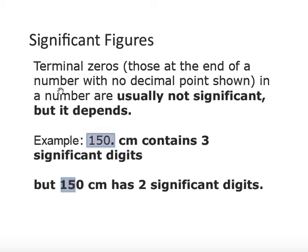Terminal zeros — those at the end of a number with no decimal point shown — are usually not significant, but it depends. For example, with a meter stick measuring something that happens to be exactly 150 centimeters: if we want to indicate that the zero is significant, we use a dot after the number, writing 150 with a period. That dot indicates the zero is significant. But if we do not include a dot, then only the 1 and the 5 are considered significant, giving only two significant digits. This dot is a way of indicating that the zero is significant.